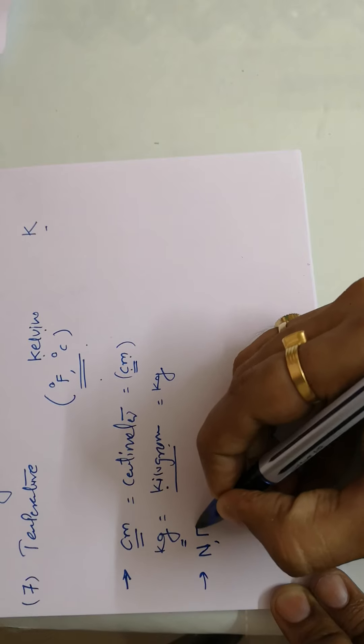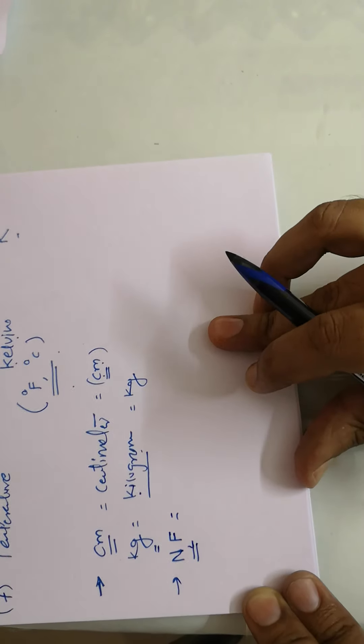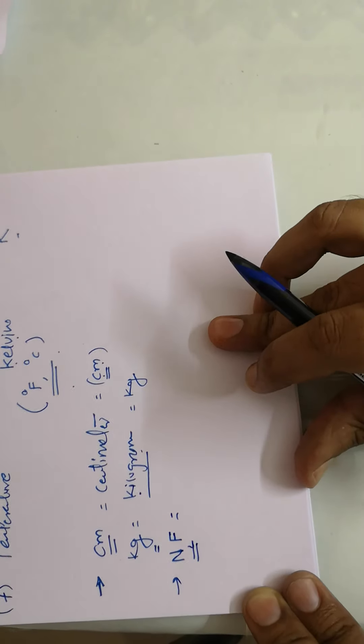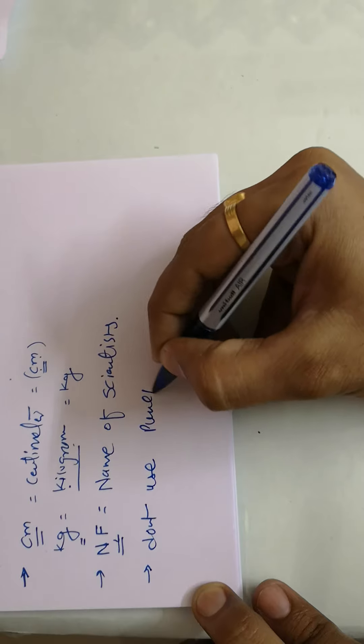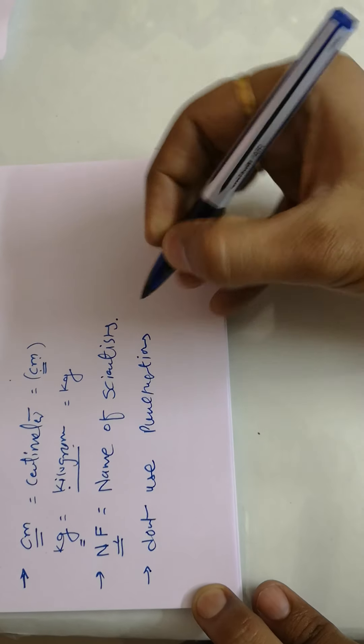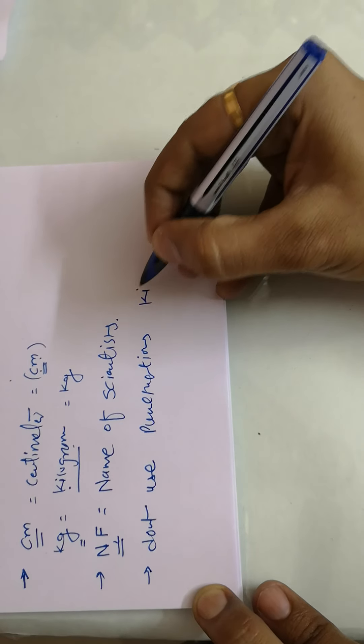Whenever you use the name of a scientist, you use capital alphabets — bigger or capital fonts. Capital letters are only used when the unit is named after a scientist.